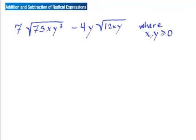Now let's look at this more complex problem. At first glance it looks like I can't do anything, but I can see some areas where terms can simplify. In order to add them, I need what's underneath the square root to be the same, and any letters outside also have to match. The note here says x and y are always positive, so I don't have to deal with absolute values like we did in the last section. Looking at that 75, I see a perfect number inside — 25 times 3.